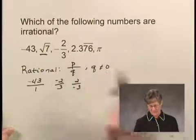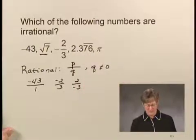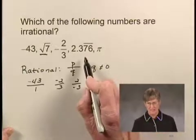2.376, where the digits 76 repeat, is a rational number because we know that repeating decimals are rational.